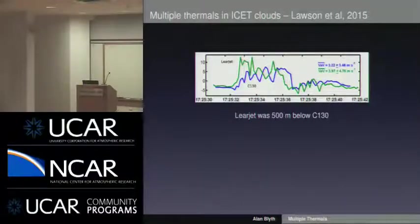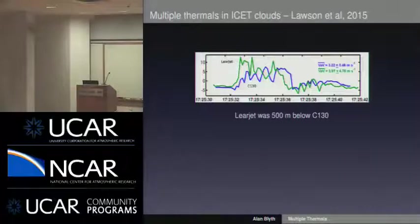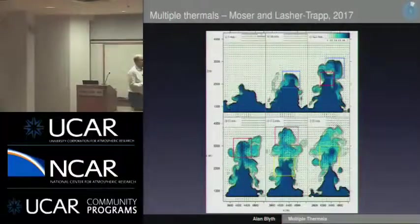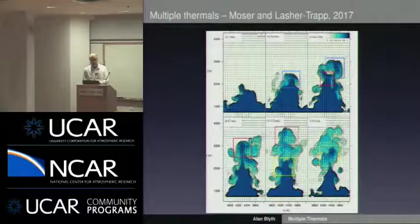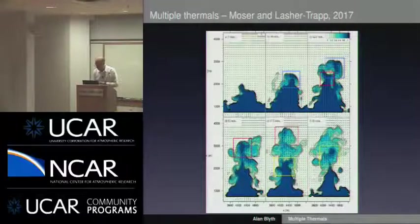This is in tropical cumulus clouds. The Learjet was flying 500 metres below the C-130 to compare the wind measuring systems. This is the C-130 and this is the Learjet, so the Learjet's down here — clearly a new thermal going through these tropical clouds. That's significant. And here's some work by Sonia, Daniel Moser, and others — some modelling studies looking at multiple thermals, looking at the entrainment process in these multiple thermals. So there's an awful lot of work going on in these multiple thermal ideas.